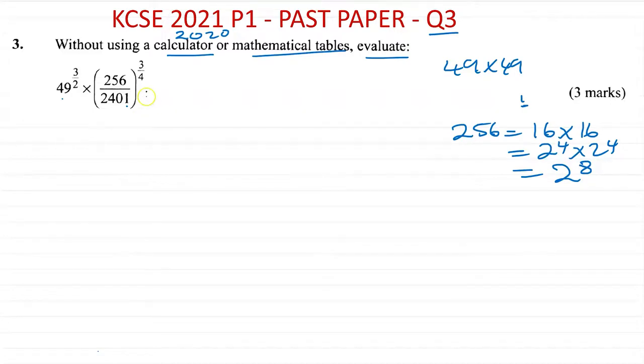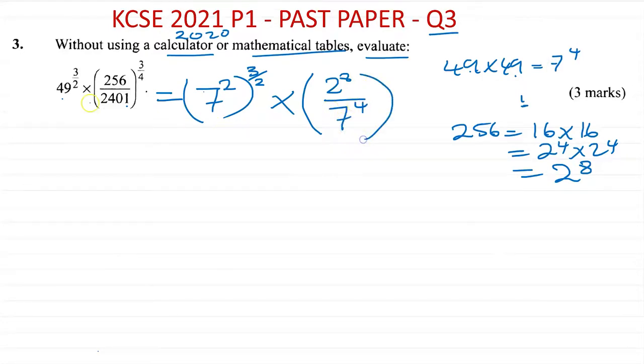So this gives you two to the power of eight. I'm going to write this down as 49, seven squared, and then I still have my power outside three over two times 256. I've worked that out, which is two to the power of eight. And then 2,401, I worked that out, that's going to be seven squared times seven squared, which is seven to the power of four. So this is seven to the power of four. And don't forget the power outside, which is three quarters.